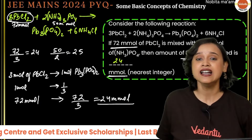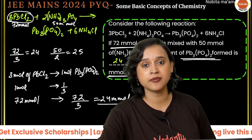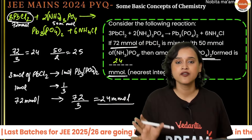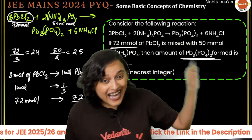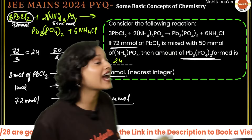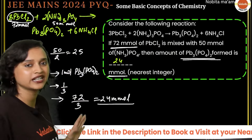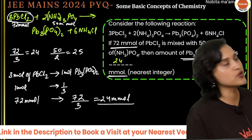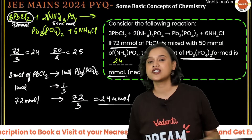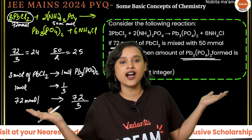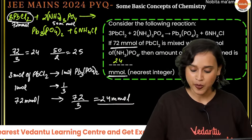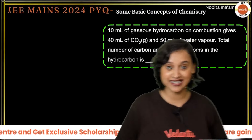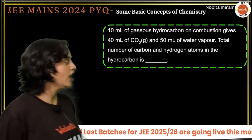It is very easy! Next time a question from this chapter comes up, don't be scared. You just have to find out the limiting reagent and the excess reagent, then apply the stoichiometric concept — and you're done.